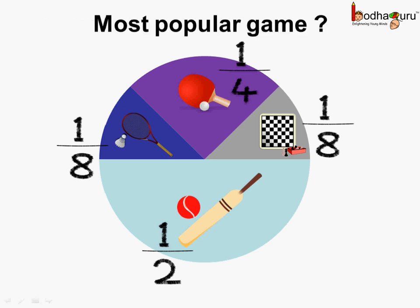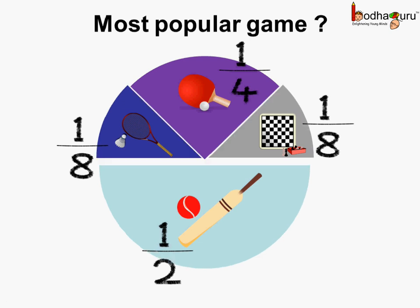Now, using this chart, let's figure out which was the most popular game. If we see the size of each part, it is clear that cricket was the most popular game amongst those 80 children. Even if we see the fraction related to cricket, which is 1 by 2, it is the largest among 1 by 8, 1 by 4, and 1 by 8. So cricket was the most popular game amongst those 80 children.